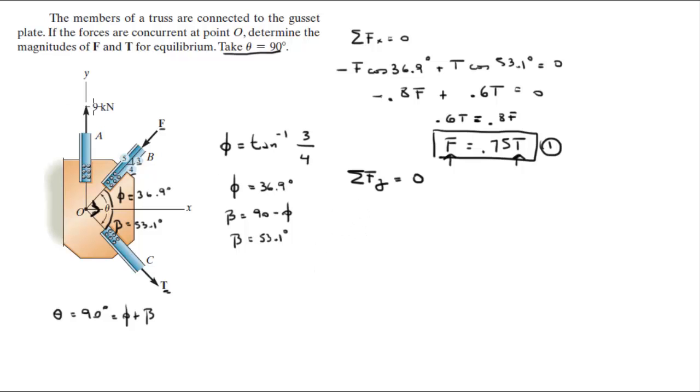So in the y I got this force which is 9k minus F sine of 36.9 degrees minus T sine of 53.1 degrees is equal to 0. They're both going down so they're both negative. So this is 9k minus 0.6 F minus 0.8 T. So I'm going to solve for F is equal to 0.